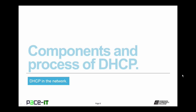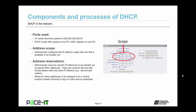Now let's talk about components and processes of DHCP. We begin with the ports used. The PC sends its discovery packet out on the broadcast address 255.255.255.255 on UDP port 67. When the DHCP server responds, it responds to the PC's MAC address — Media Access Control address — on UDP port 68. That's important to remember: the PC uses UDP port 67, and the DHCP server responds on UDP port 68.